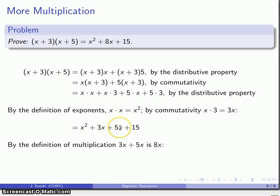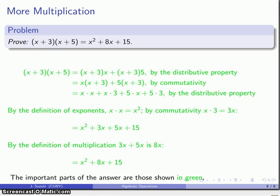I have 3x here, I have another 5x here, I have a total of 8x there. And that gives me my final result. And again, it's a proof, so I need to include everything that's shown in green.